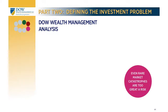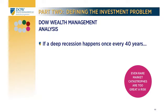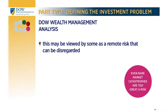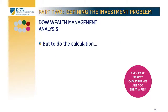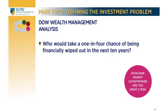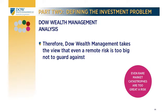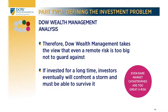The upward trends sometimes last so long that we might all be dead before the next calamity. Should we even care about the risk of a crisis if one doesn't seem imminent? Suppose we conclude that a severe recession tends to occur just once every 40 years — we might be tempted to believe that risk is remote and disregard it. However, an event expected only once every 40 years still means there is a 25% chance it will happen during the next 10 years. Who among us would risk a one-in-four chance of being financially wiped out? Because we're usually working with irreplaceable assets, Dow Wealth Management takes the view that even a seemingly remote risk of an irrecoverable loss is too big not to guard against. Long-term investors are sure to confront a storm eventually and must be prepared so as not to get wiped out.